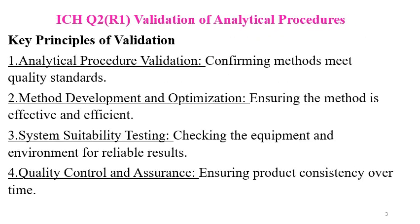The key principles of analytical procedure validation involve confirming methods meet quality standards, method development and method optimization, to ensure the method is effective and efficient. System suitability testing is a key principle, involving checking the equipment and environment for reliable results. Quality control and assurance ensures product consistency over time.